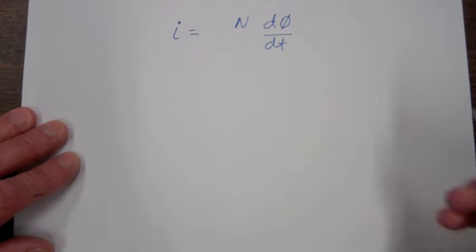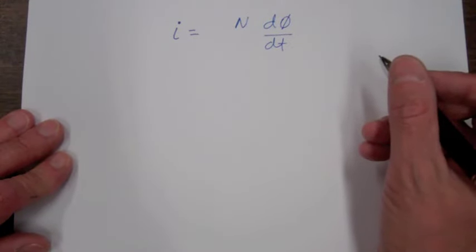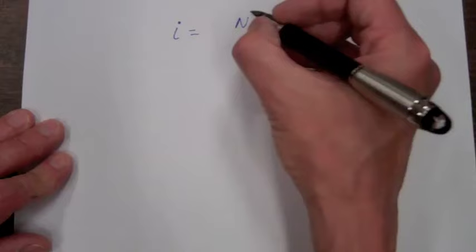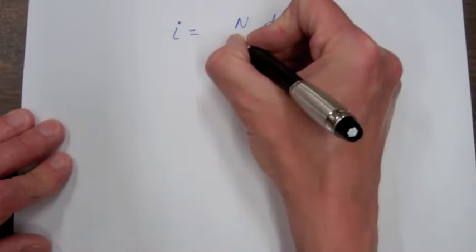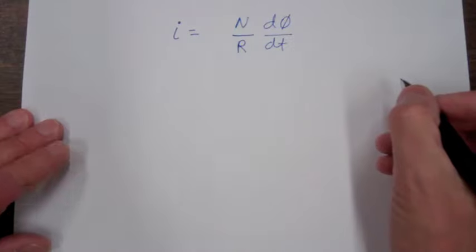If we were able to measure the resistance of the coil and the ammeter, we would also see that the current was inversely proportional to the total resistance of the ammeter and coil.